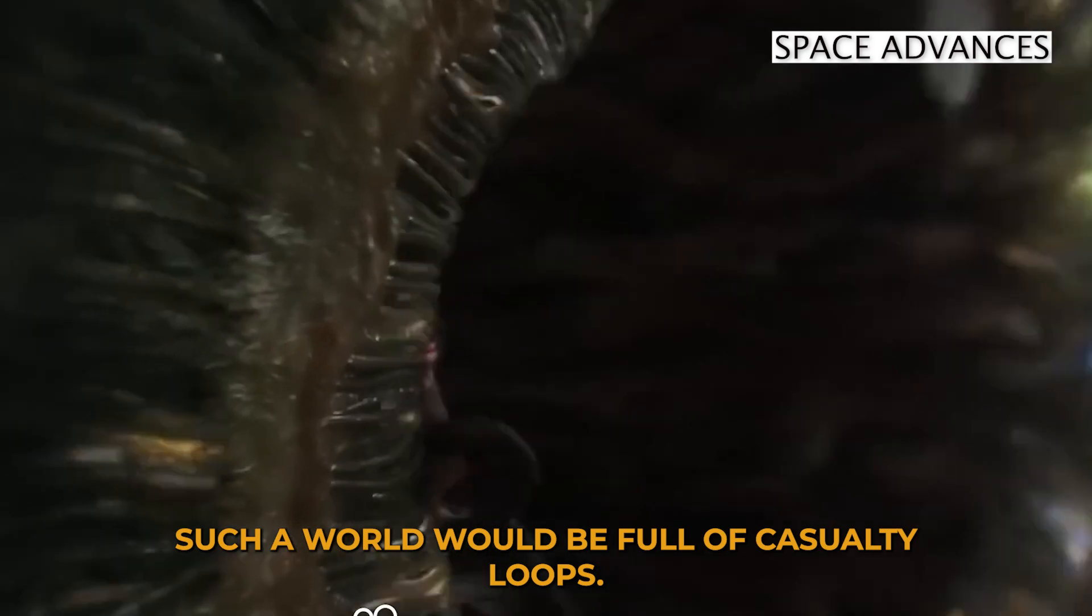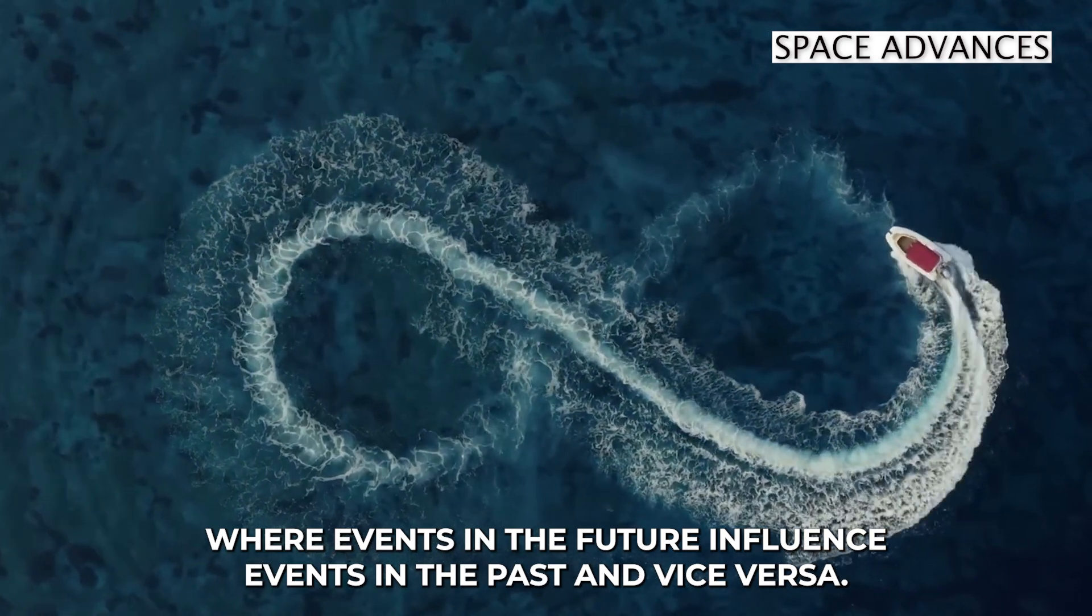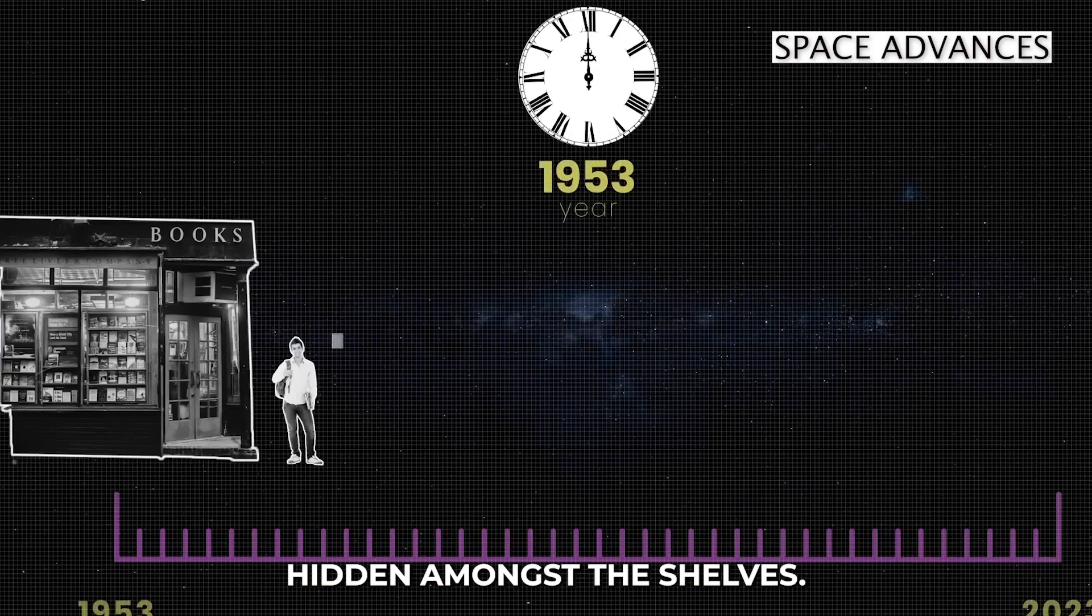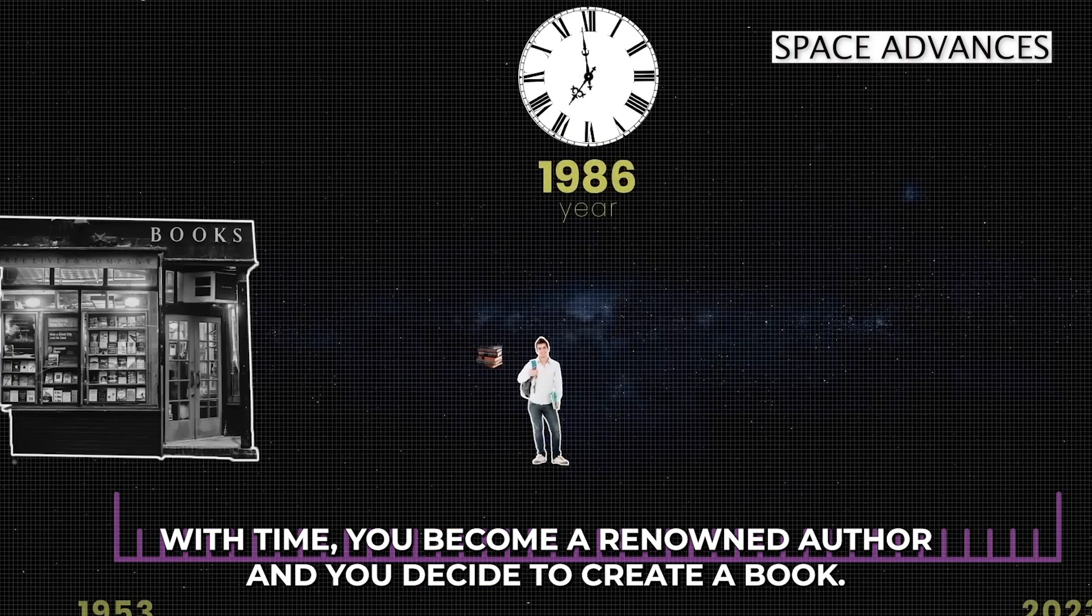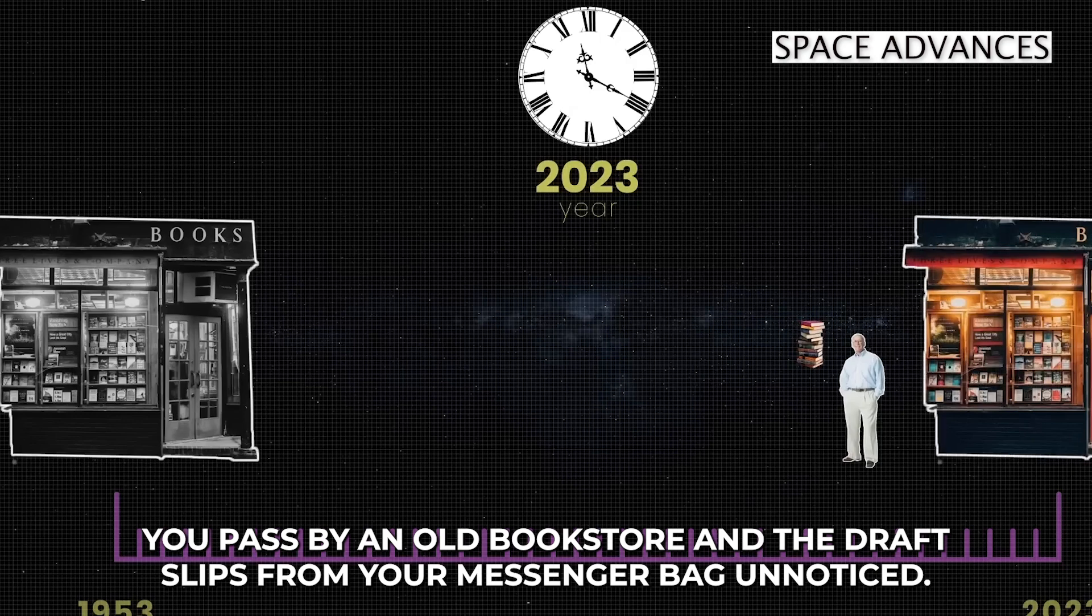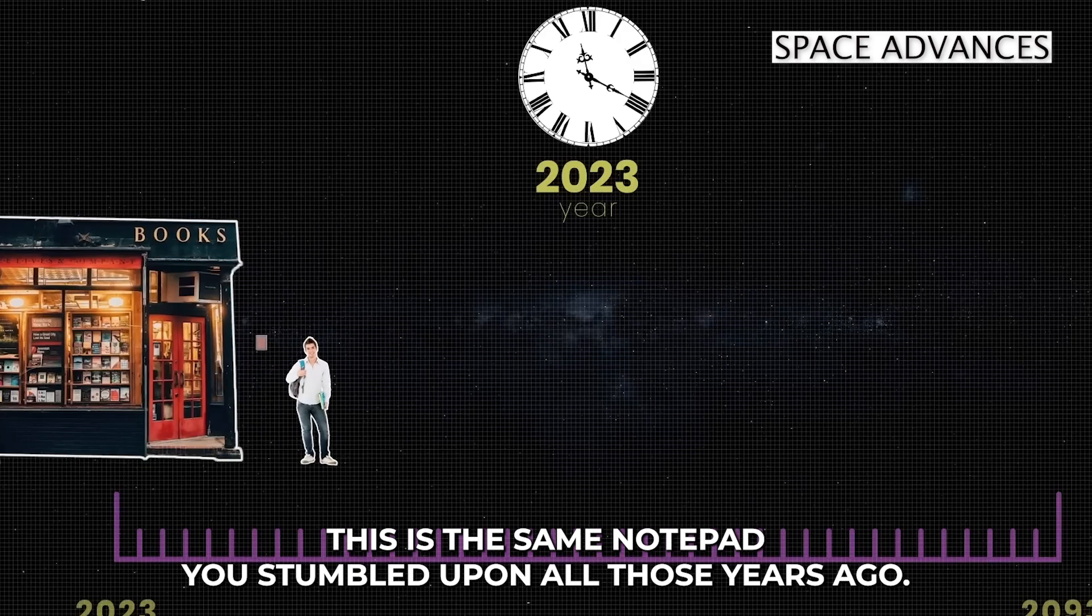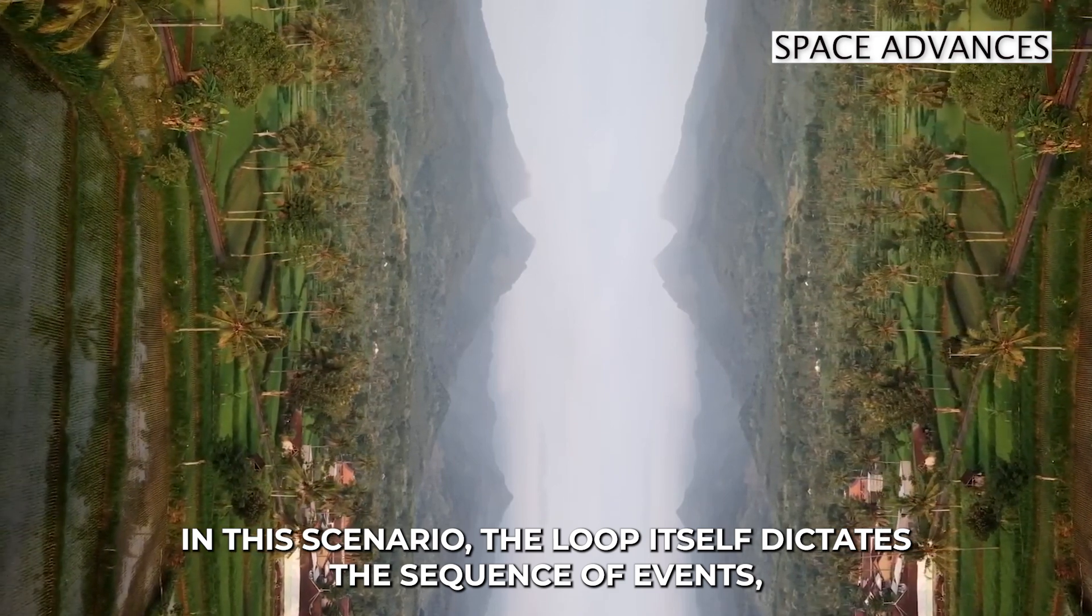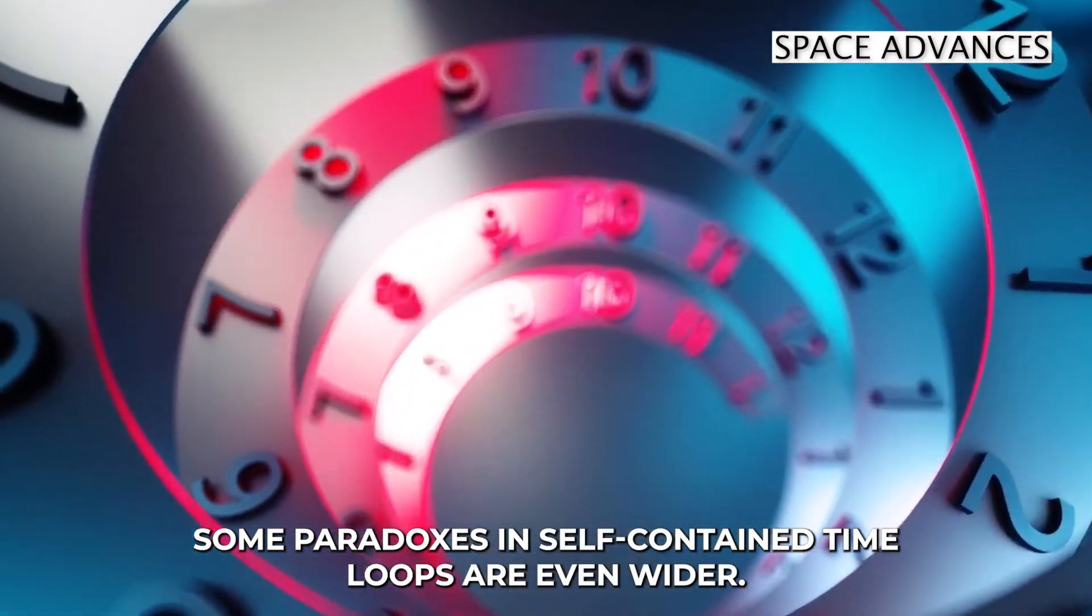Such a world would be full of causality loops. The causality loop creates a self-perpetuating closed cycle where events in the future influence events in the past and vice versa. One day, while visiting an old bookstore, you discover a captivating notepad hidden amongst the shelves. It sparks your inspiration, leading you to start writing. With time, you become a renowned author, and you decide to create a book. As you walk home on the same day you finish writing it, you pass by an old bookstore, and the draft slips from your messenger bag unnoticed. The store's owner finds it and decides to put it on the shelves. This is the same notepad you stumbled upon all those years ago. In this scenario, the loop itself dictates the sequence of events, leaving no room for alternative choices or deviations from the course of events. Some paradoxes in self-contained time loops are even weirder.